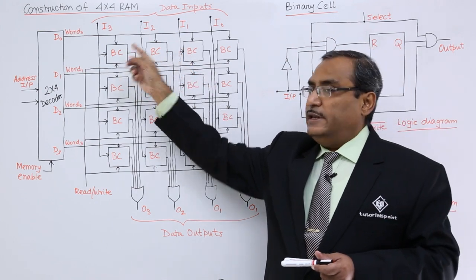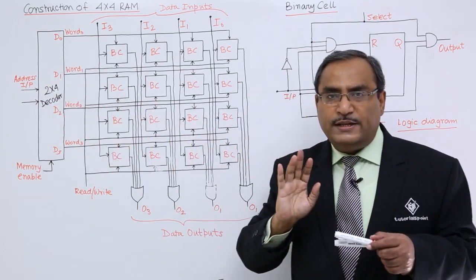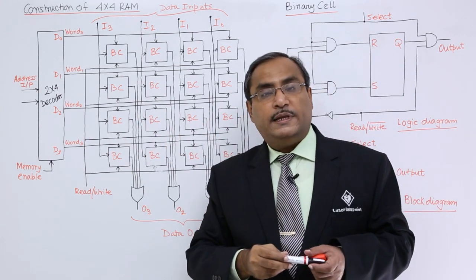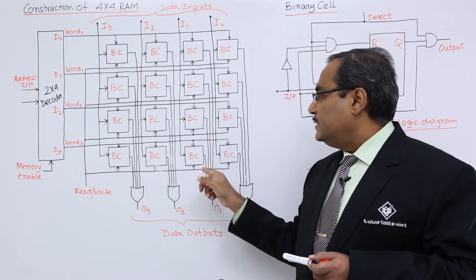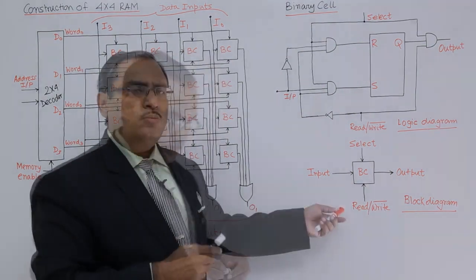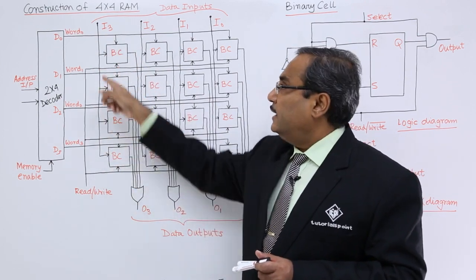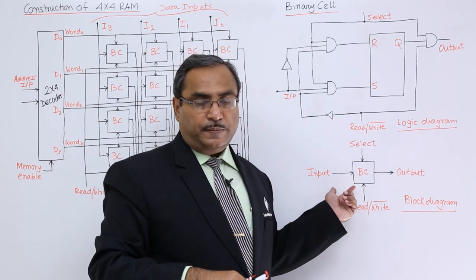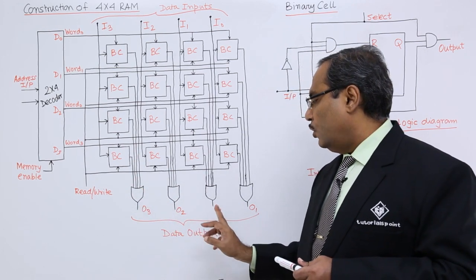Each decoder output line is connected to the select line of the corresponding binary cells. For example, if the input is 10 (which equals 2), then that particular word line gets selected and all 4 binary cells in that row are selected simultaneously. The read/write mode line is common for all 16 binary cells. The input lines I3, I2, I1, and I0 are also common for each column of 4 binary cells. All 4 output lines from each column pass through a 1-input OR gate to produce outputs O3, O2, O1, and O0.